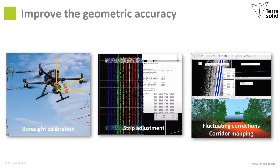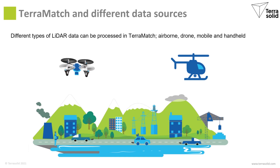To summarize, there are mainly three different applications where TerraMatch can help you improve geometric accuracy. One is for calibrating your system. One is for making strip adjustment to ensure a homogeneous point cloud where you have multiple lines or data captures. One is for typical corridor projects where you want to make fluctuating corrections along the object. As mentioned, TerraMatch can be used to handle not only one data source but many different data sources.